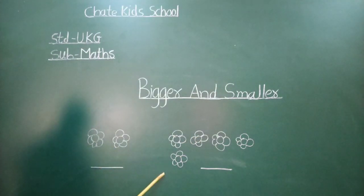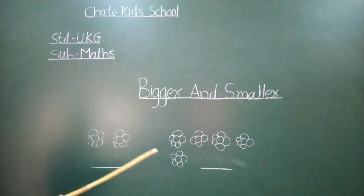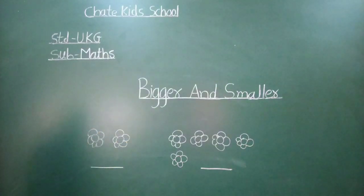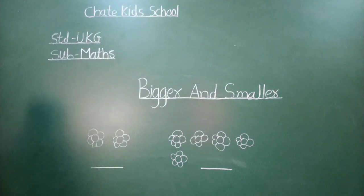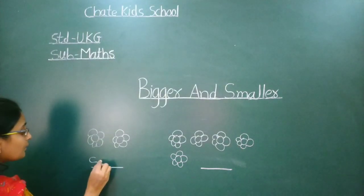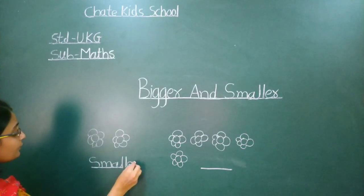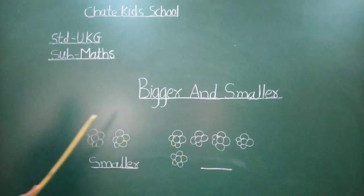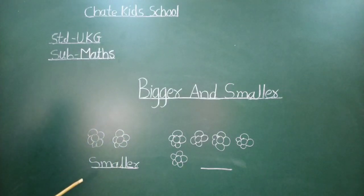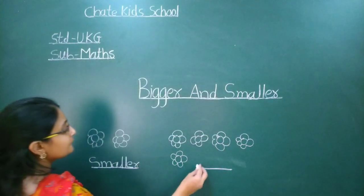Two number piksha five number bigger ahi. And five number piksha two number lahan ahi. Two number kaya hai? Five number piksha lahan ahi, small ahi. And five number — two number piksha big ahi, motha hai, means bigger.